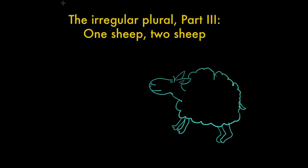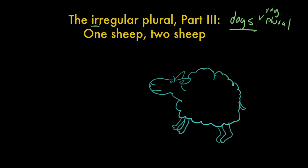Hello grammarians. I wanted to talk today about a different kind of irregular plural. So we've been talking about regular plurals, where you take a word and you add an S. So for example, the word dog becomes dogs — you add an S. And this is the regular plural. But I've been talking about the irregular plural, the multiple form of a word that is not regular — irregular.